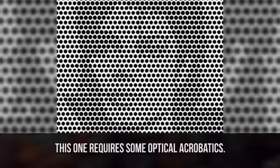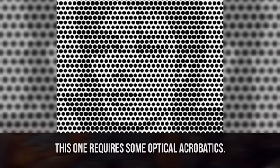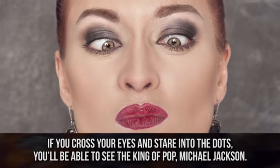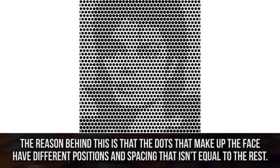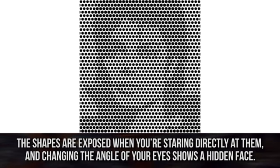Hidden Face. This one requires some optical acrobatics. If you cross your eyes and stare into the dots, you'll be able to see the king of pop, Michael Jackson. The reason behind this is that the dots that make up the face have different positions and spacing that isn't equal to the rest. The shapes are exposed when you're staring directly at them, and changing the angle of your eyes shows a hidden face.